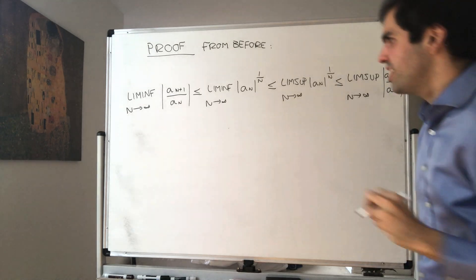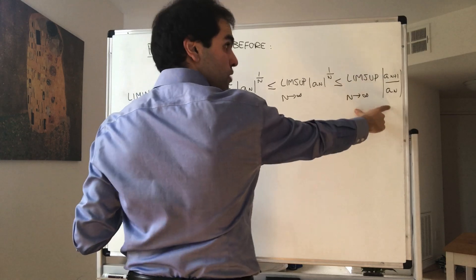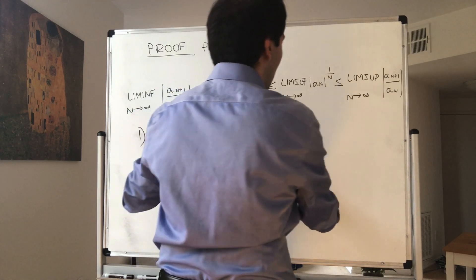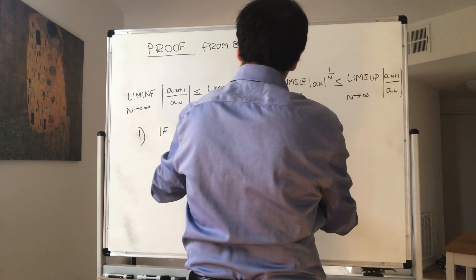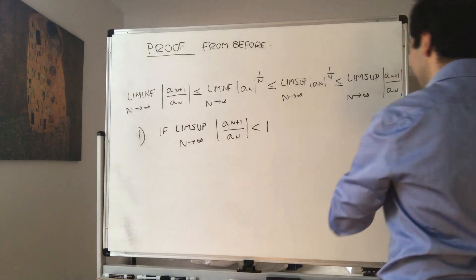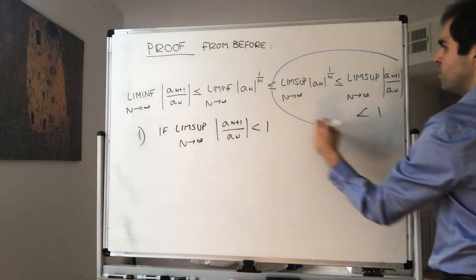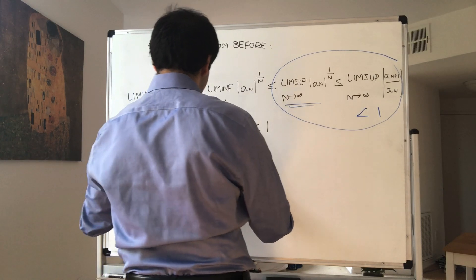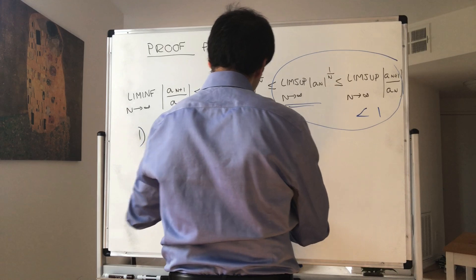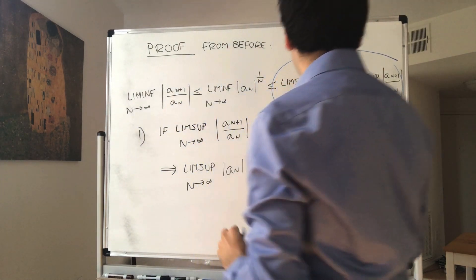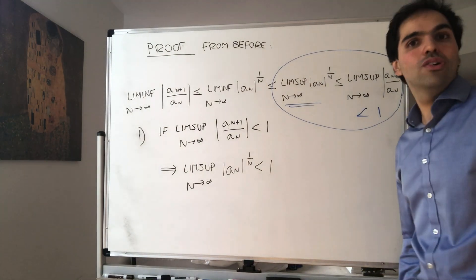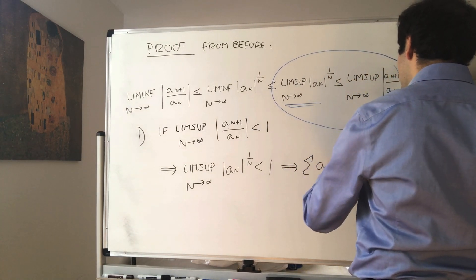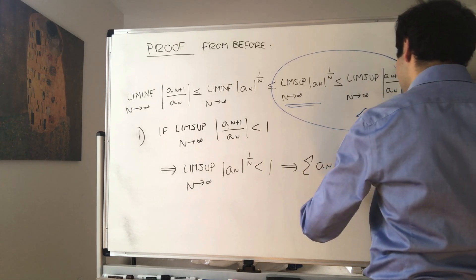Now let's see what happens in our cases. In the first case, if the lim sup as n goes to infinity of a_{n+1} over a_n is less than 1, then from the chain of inequalities we get that the lim sup of the nth roots — the lim sup of a_n^{1/n} — is also less than 1. And by the root test we can conclude that the series converges absolutely.